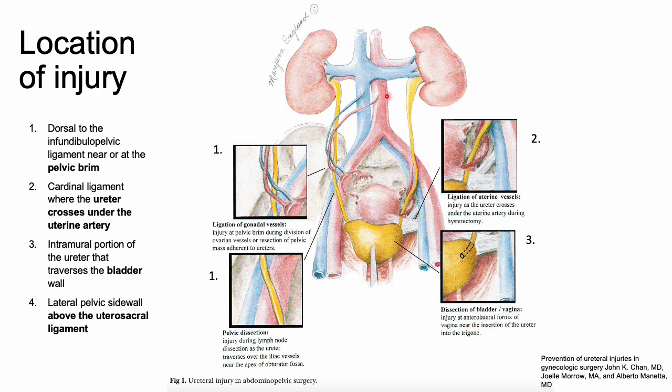The second location is the cardinal ligament, where the ureter crosses under the uterine artery. About 80% of the time, ureteral injury occurs at the level of the uterine artery.